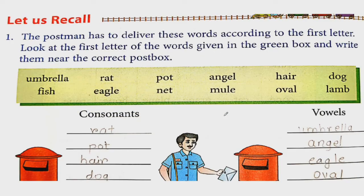Now let's move to the next question. Question is, let us recall. The postman has to deliver these words according to the first letters. The postman shown in the picture has to deliver letters according to the first letter. Look at the first letter of the word. You are given some words in a box. Look at the first letter of the words given in the green box and write them near the correct post box. You are given two post boxes. One post box is for vowels and one is for consonants. So you have to choose words from the green box and write them in the lines of each post box. How will you write? By looking at the first letter of that word.